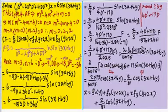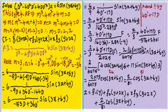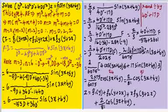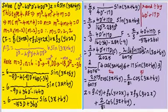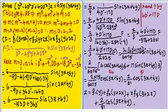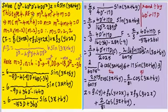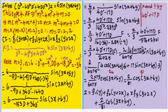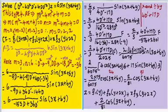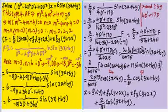The problem is D³ minus 4D²D' plus 4DD'² of z equals 6·sin(3x + 6y). Looking at the right-hand side, it is of the form sin(mx + ny), so it is type number 4. We write the auxiliary equation by replacing D by m and D' by 1, giving: m³ minus 4m² plus 4m equals 0.